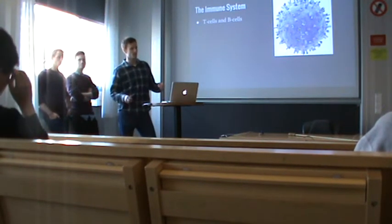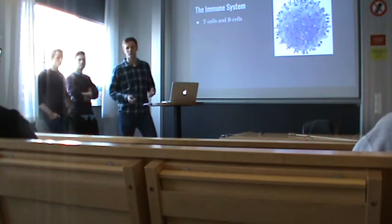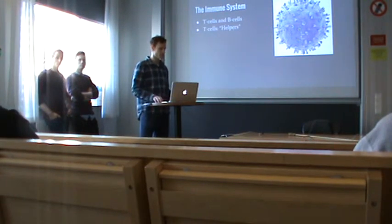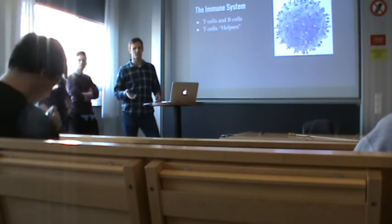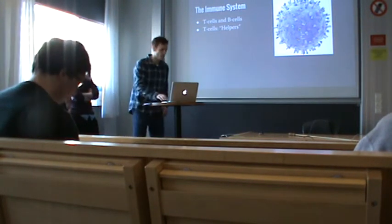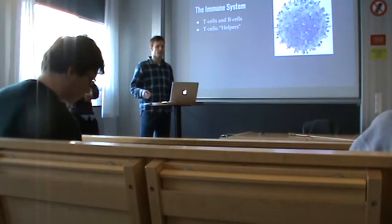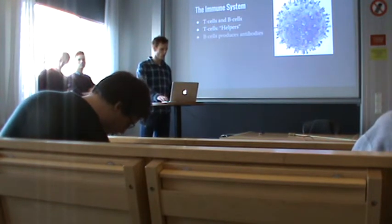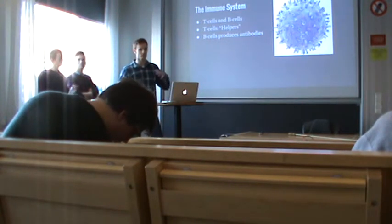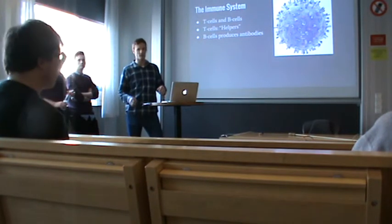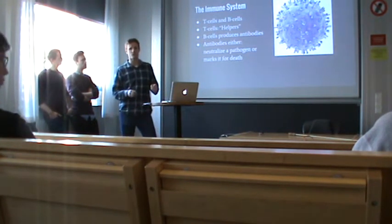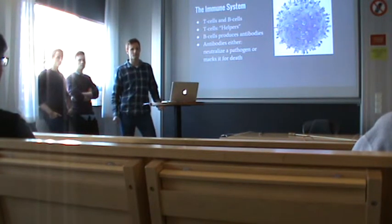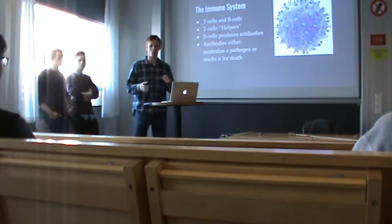The two main agents in the adaptive immune system are T-cells and B-cells — white blood cells. There are many types of T-cells, so we're going to consider them simply as helpers. They're made in the thymus, a little organ located above the heart, while B-cells are made in the bone marrow. B-cells produce antibodies, which are the main factor of an immune response. Antibodies make the main strike against pathogens — they can either neutralize pathogens or, more commonly, mark them so that killer cells know what to kill.